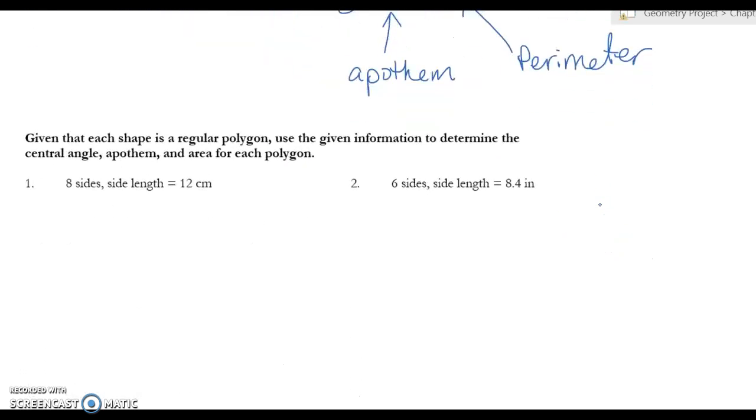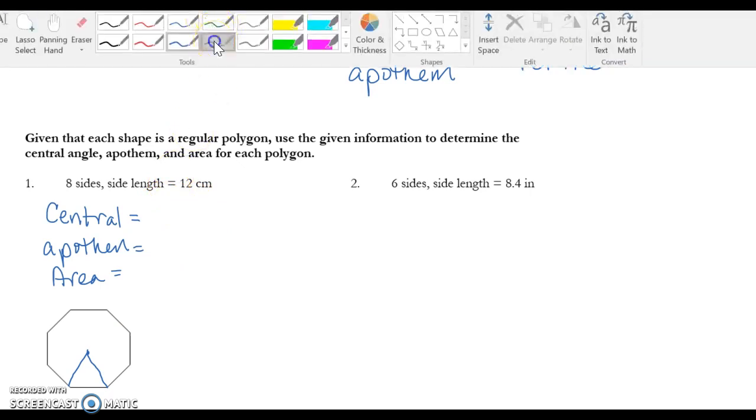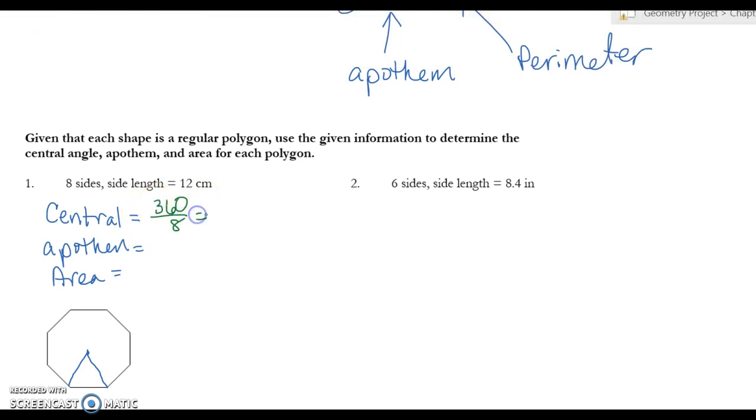All right, so let's try some examples. For each shape given, use the given information to determine the central angle, the apothem, and the area. Okay, so 8 sides. So I kind of cheated, I went and found an octagon. And so there's my central angle, and so my central angle again is 360 divided by the number of sides, so 360 divided by 8, which gives us 45.